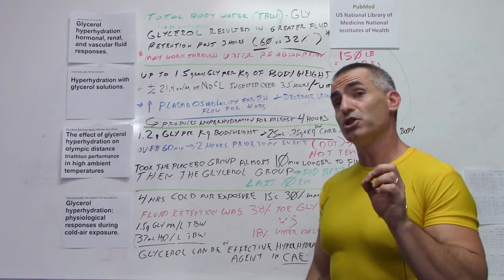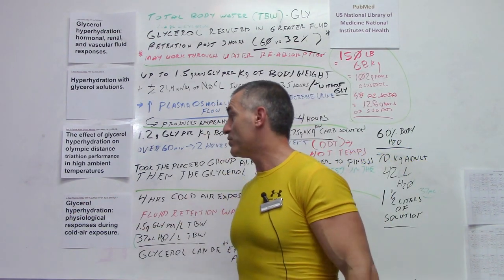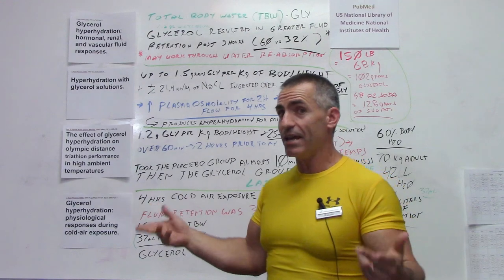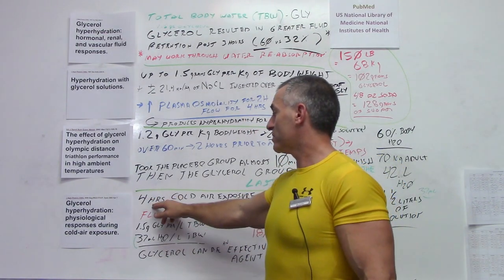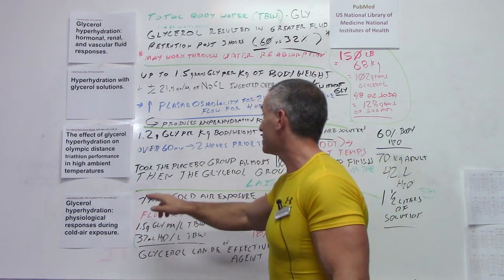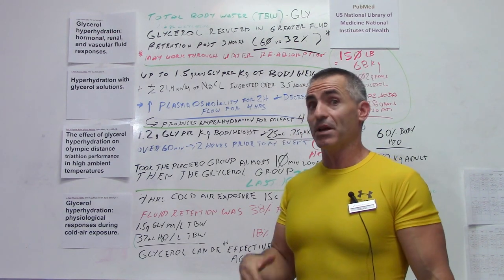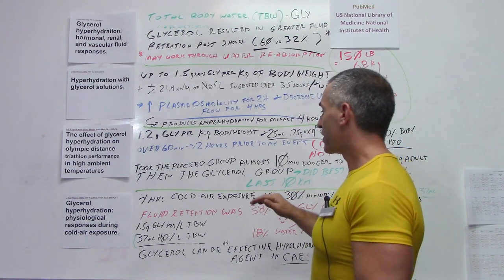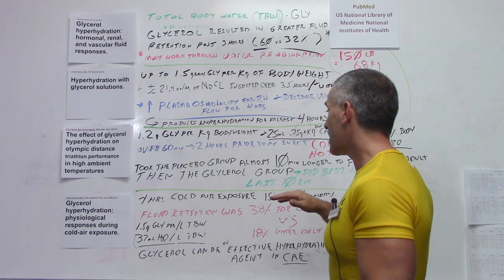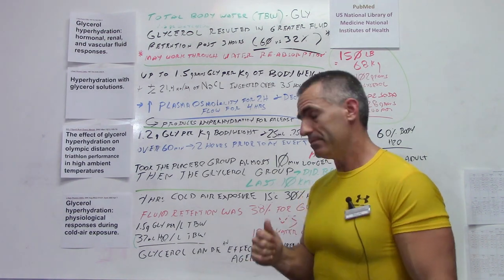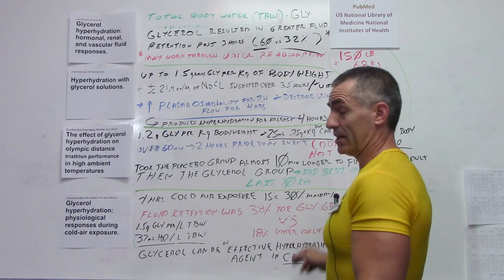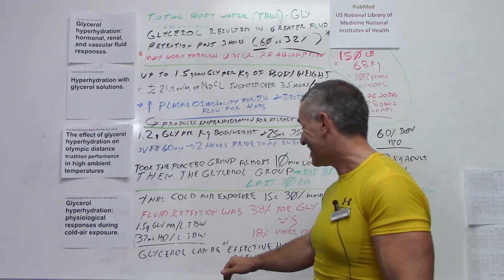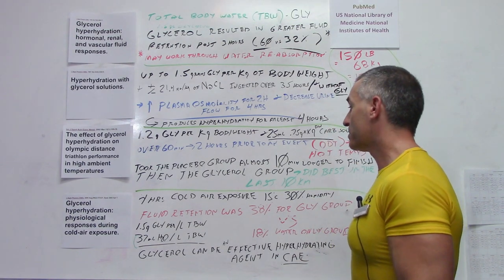Glycerol has been repeated over and over again as far as being effective in high temperatures. Now, the one interesting study as far as extremes in cold was published in 2005 Journal of Applied Physiology: Glycerol Hyperhydration, Physiological Responses During Cold Air Exposure, otherwise known as CAE. They took a group and exposed them to 15 degrees centigrade for four hours, which is interesting because four hours comes up a lot in about the average amount of time that glycerol seems to have its impact. Four hours of cold exposure, 15 degrees centigrade, 30 percent humidity.